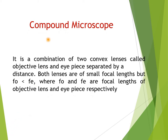Now we move to the combination of lenses — that is called a compound microscope. A compound microscope is a device used to produce greater magnification. It is a combination of two converging lenses called the objective lens and eyepiece lens, separated by a particular distance. The objective faces the object and the eyepiece is through which you see the magnified image. Both lenses have small focal lengths, but the focal length of the objective is less than that of the eyepiece.